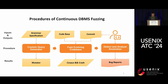The final step involves detection and analysis of bugs, encompassing anomaly recognition, deduplication, and minimization. Anomalies may occur during query execution, and the fuzzer needs to actively monitor the system to identify any deviations from expected behavior. After that, anomalies need to be deduplicated to keep unique ones, and then we can produce bug reports.